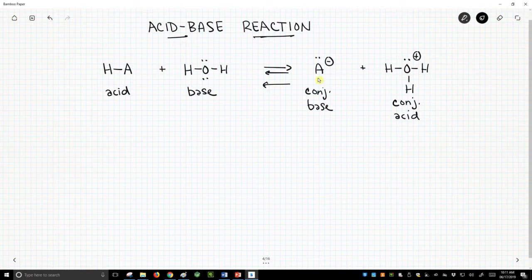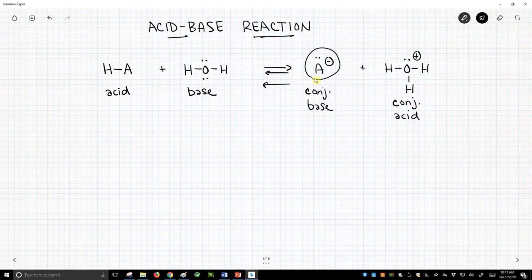So going backwards, A- is going to pick up the proton, and so its role now is a base, whereas HA gave up the proton, so it's an acid. So we've labeled the roles for the different items in our reaction.